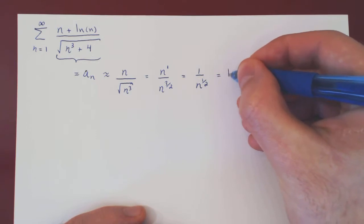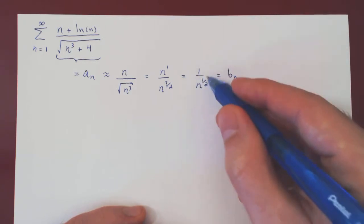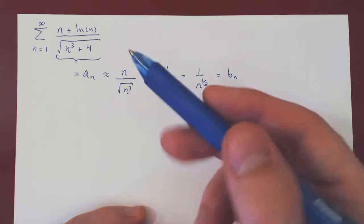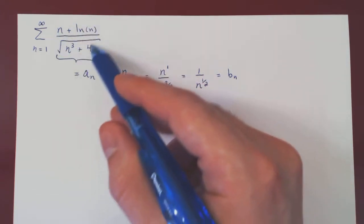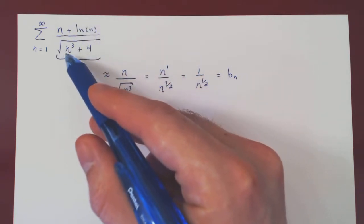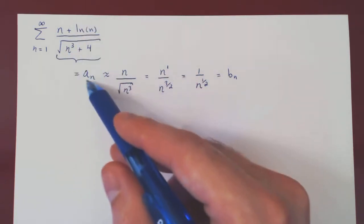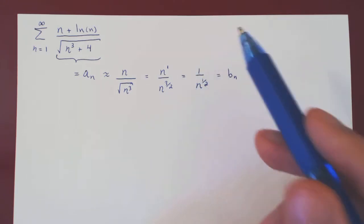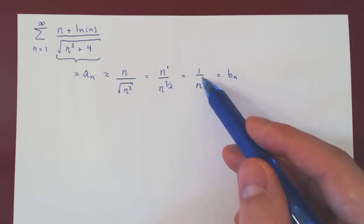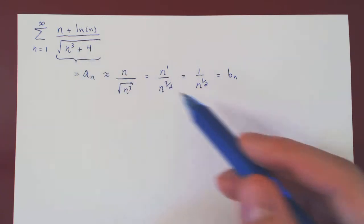And this is our new sequence, bn. Much simpler than the original sequence we're summing now. When n is large, an, which is rather unpleasant looking, is just roughly 1 over n to the 1 half. And so, when we sum these terms, we will get a simple p-series. So, this looks pretty good.